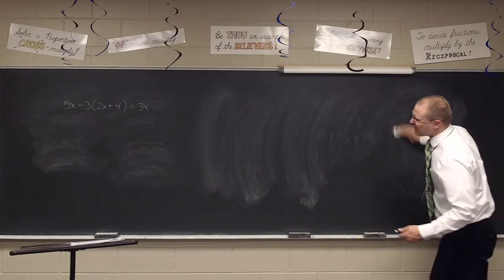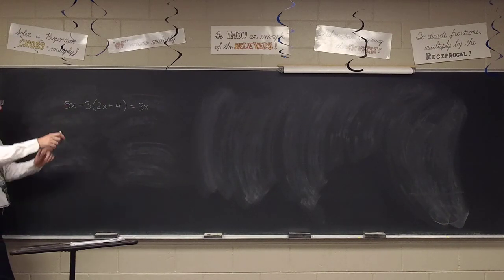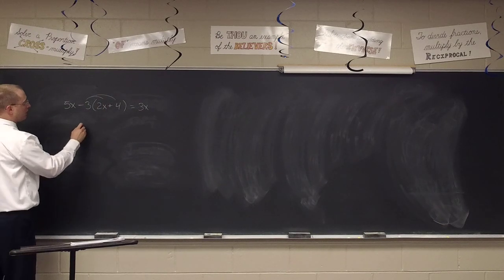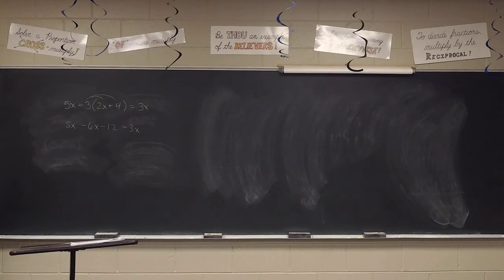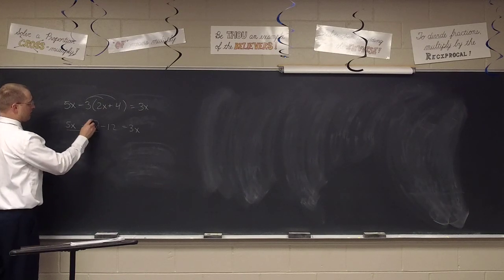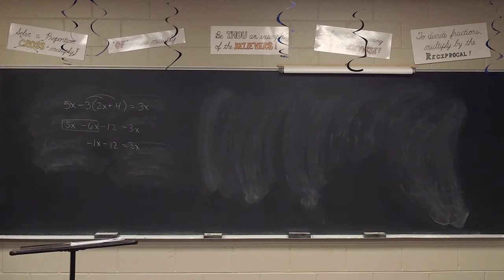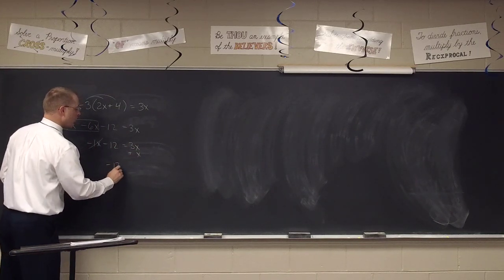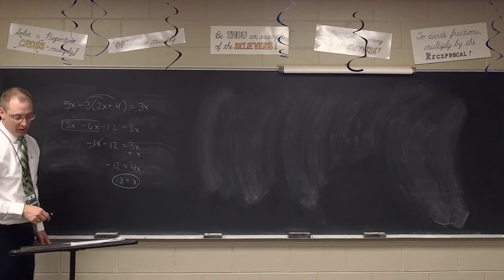Get rid of the parentheses — distribute. Be careful with your distribution: negative 6x, negative 12. Notice the signs are different. Don't lose the 5x at the beginning either. Now combine like terms — the only place we can combine is the negative 6x and the 5x, to get negative 1x. Then negative 2x minus 12 equals 3x. Moving terms, negative 12 equals 4x plus... wait, we get x equals negative 3 for our answer.